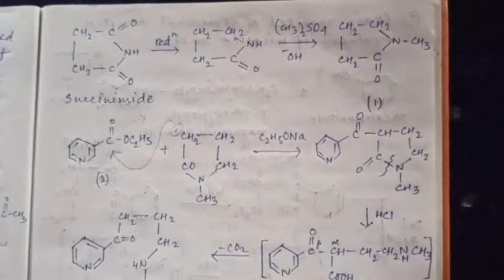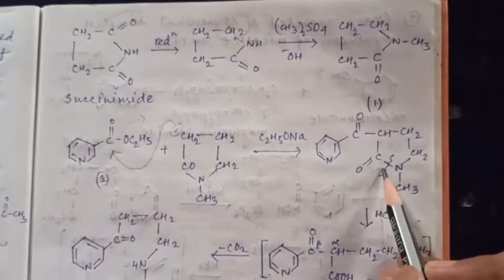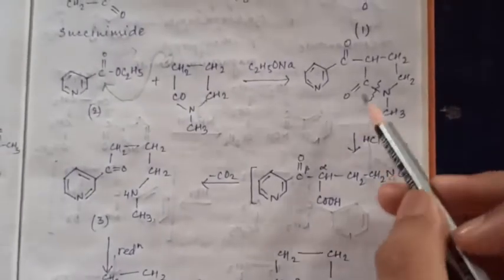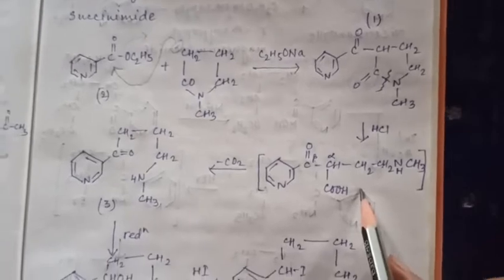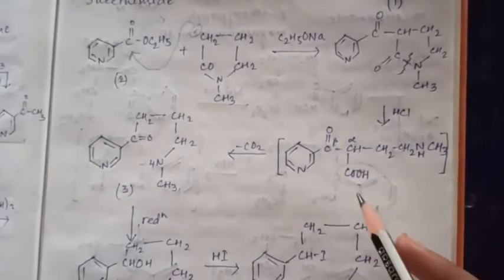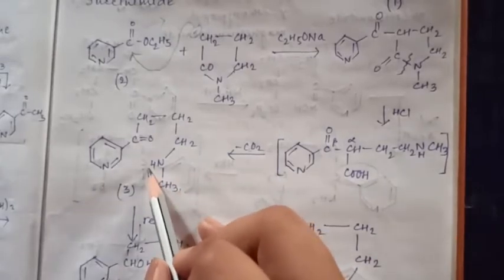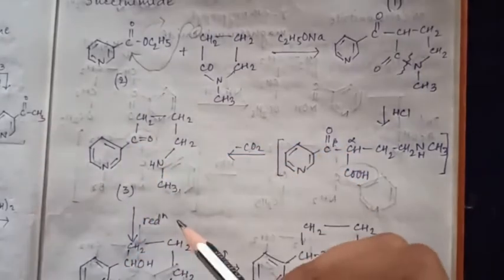A condensation reaction occurs, involving the OC2H5 group. After condensation, hydrolysis is performed. After hydrolysis, we obtain an aminoketone intermediate.